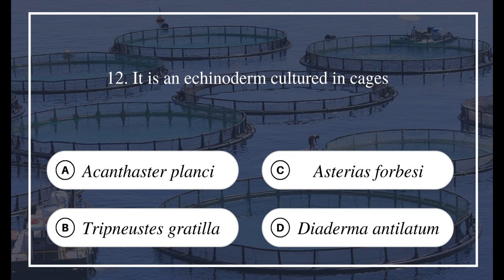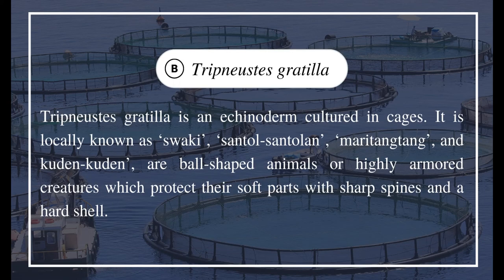Question 12: It is an echinoderm cultured in cages. Options: a) Acanthaster planci, b) Tripneustes gratilla, c) Asterias forbesi, d) Diadema antillarum. The answer is B, Tripneustes gratilla. Tripneustes gratilla is an echinoderm cultured in cages, locally known as swaki, santil, santilin, maritangtang, and kutin-kutin. These are ball-shaped animals or highly armored creatures which protect their soft parts with sharp spines and a hard shell.